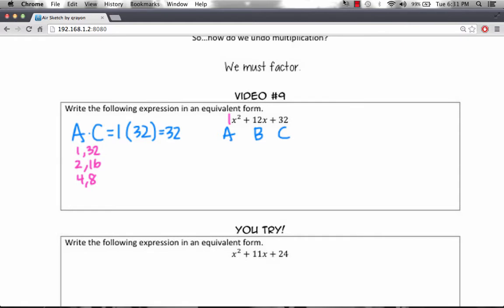Now, which of these three pairs adds up to 12? Well, 1 plus 32 is 33, so we can't use that one. 2 plus 16 adds up to 18, so we can't use that. 4 plus 8 gives us 12. So we're going to use these two values when we're rewriting our expression.